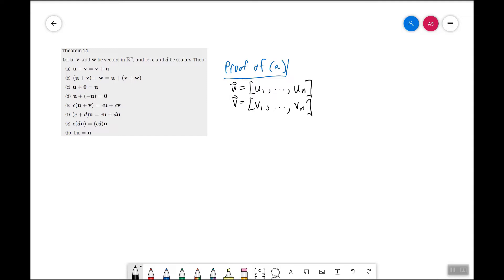Then to show that the theorem is true, I need to compute both sides and show that I get the same answer. Well, the left-hand side of the claim, that's this guy here, so u plus v, that's going to just be u1 plus v1, u2 plus v2, dot dot dot, un plus vn.